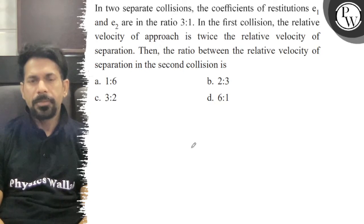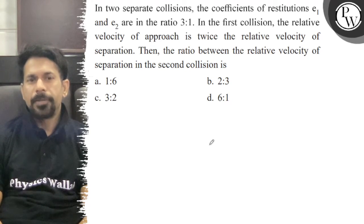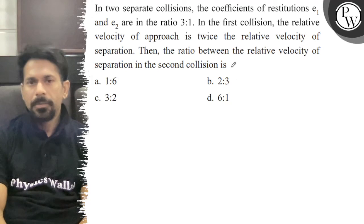Hello, let's see the question. In two separate collisions, the coefficients of restitution e1 and e2 are in the ratio 3:1. In the first collision, the relative velocity of approach is twice the relative velocity of separation. Then, the ratio between the relative velocity of separation in the second collision to the velocity of approach.